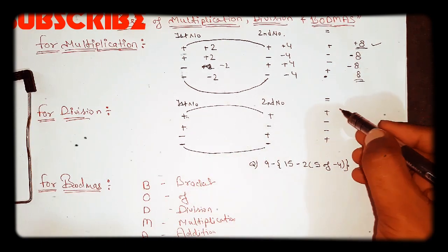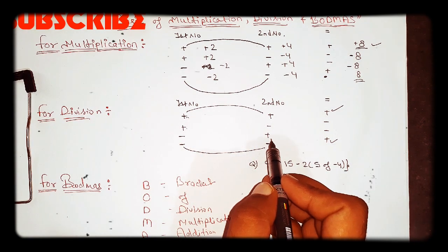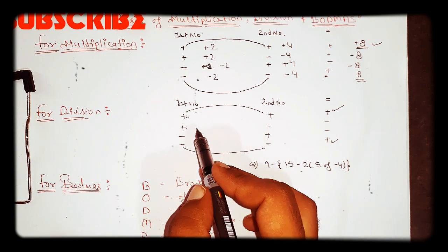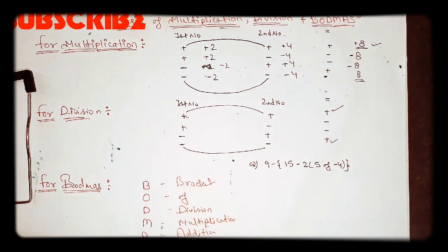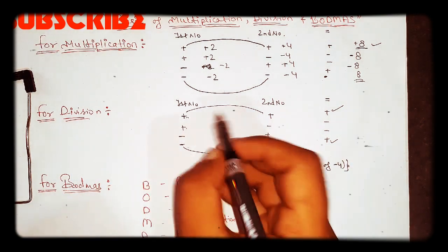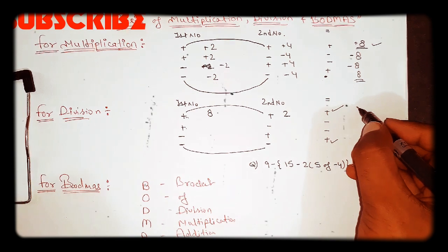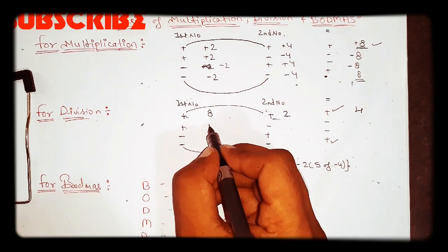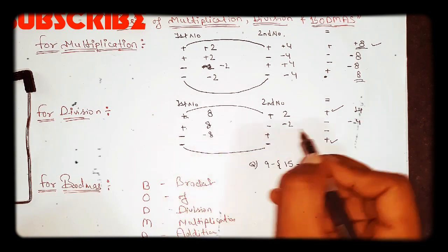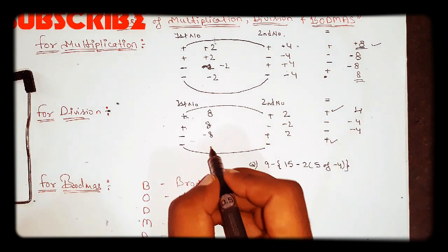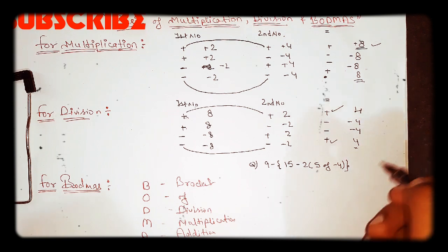This same rule follows for division. If both symbols are the same, the answer is positive. If one is negative and the other positive, the answer is negative. For example: 8 divided by 2 gives 4; 8 divided by minus 2 gives minus 4; minus 8 divided by 2 gives minus 4; and minus 8 divided by minus 2 gives positive 4.